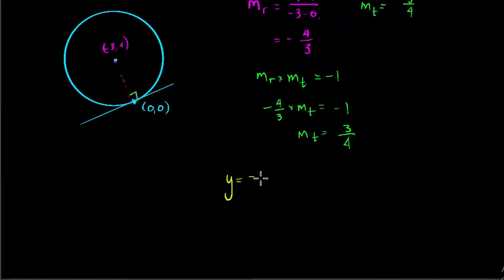So far we have y equals 3 over 4 times x plus C. We still don't have the C value.